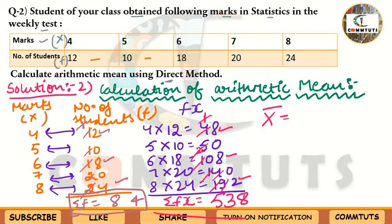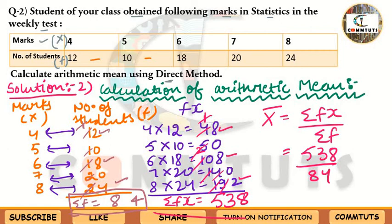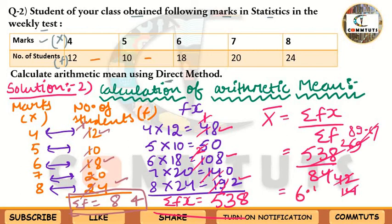Apply the Direct Method formula for discrete series: x̄ = ΣFX / ΣF = 538 / 84. Simplify: divide both by 2 to get 269/42, then divide by 3 to get further simplified, giving 6.40. So the answer is 6.40. Draw a line and write: Thus the average marks scored by students is 6.40.